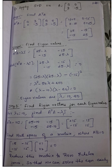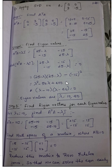The determinant of this characteristic equation is computed and equated to 0. You multiply the diagonal entries: (25 minus lambda) times (25 minus lambda) minus (minus 15) squared, equated to 0. When you simplify, you get a quadratic equation.